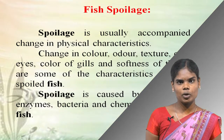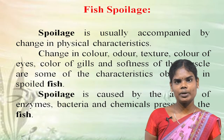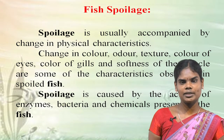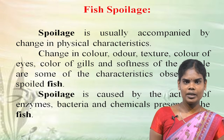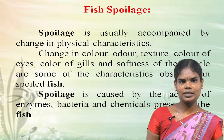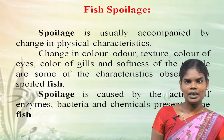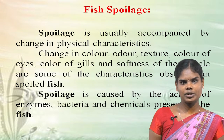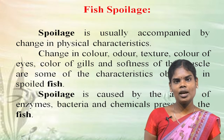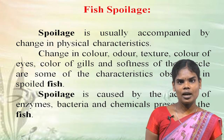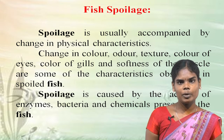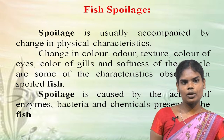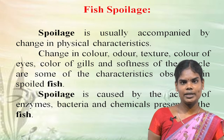Let's see about fish spoilage. What is meant by fish spoilage? Fish spoilage is usually accompanied by physical changes in the physical characteristics of fish. Change in color, odor, texture, flavor, appearance and stiffness of muscles etc. are some of the basic and common characteristics of fish spoilage.